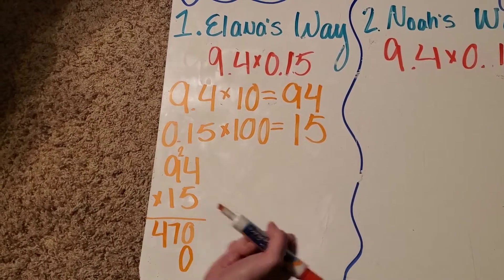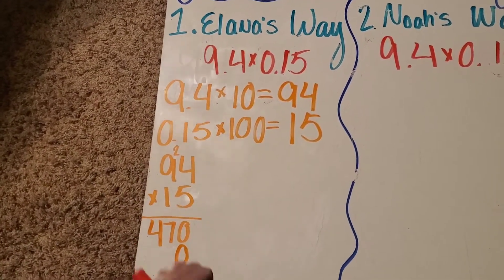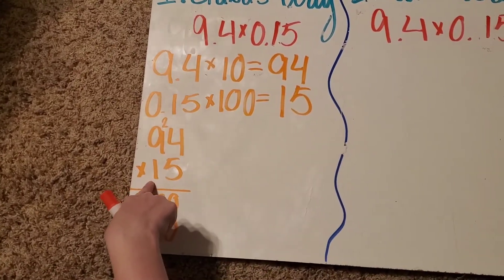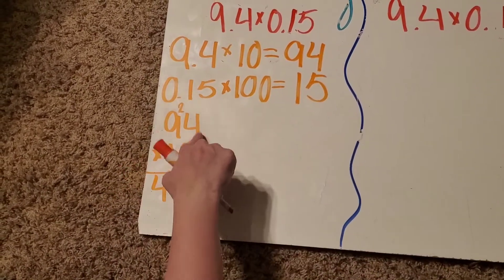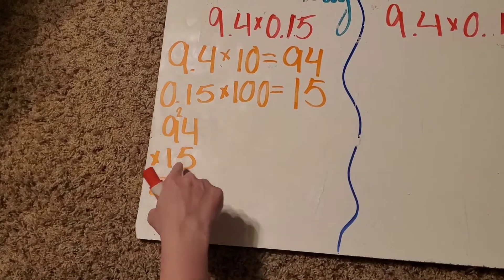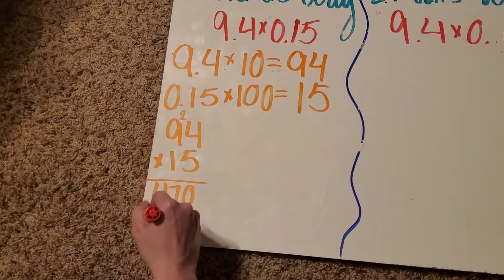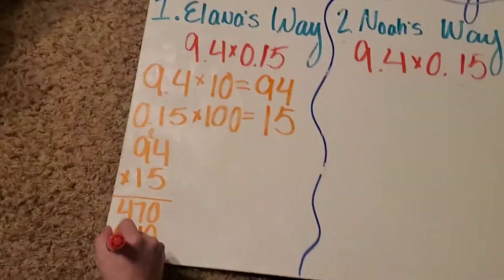Now, I need to add a placeholder 0, because I'm actually multiplying by 10, not just by 1. So 1 times 4 is 4. 1 times 9, 9.